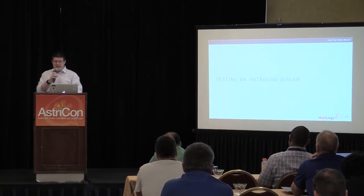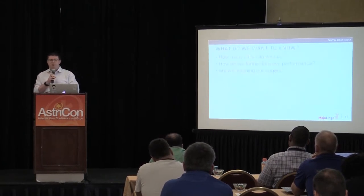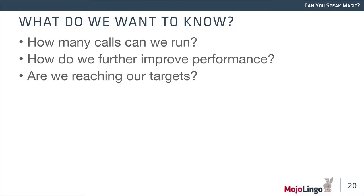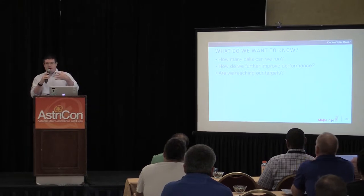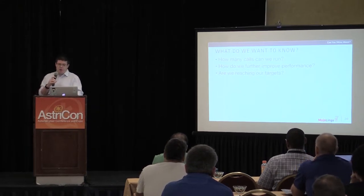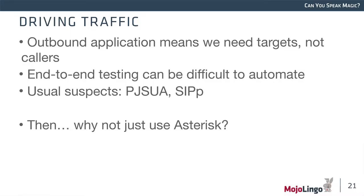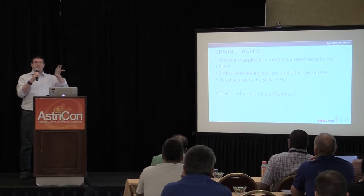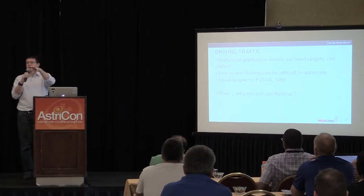How do we test something like that? How many calls can we run? How do we further improve performance? Are we reaching our targets? These people asked us to achieve a very specific throughput based on their calculations of how to keep customers happy. So, if you're testing a telephone application and doing sizing to know how many calls you can run, you need to drive traffic somehow. In this case we were dialing out, so Asterisk itself was driving the load.